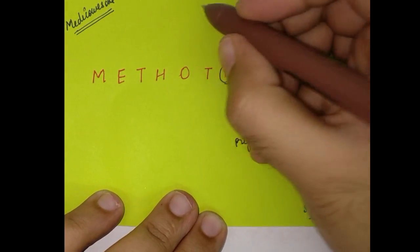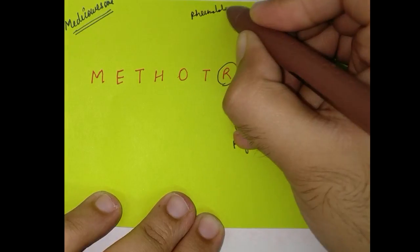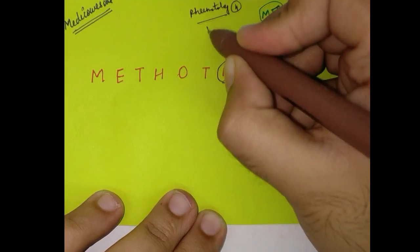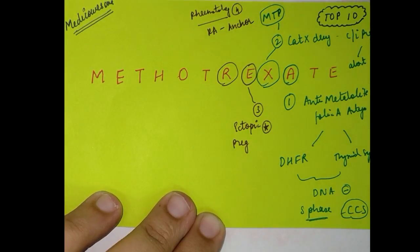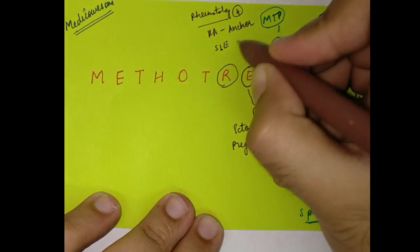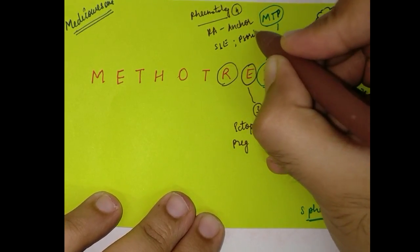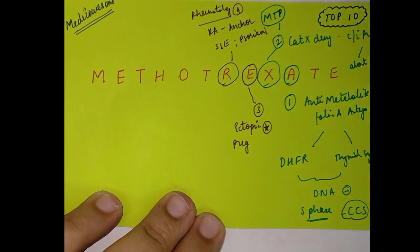Number four — the rheumatological indications. In rheumatoid arthritis, it's an anchor drug — an essential drug. It can also be used in other conditions like SLE and psoriasis. It's a very important drug in these indications.